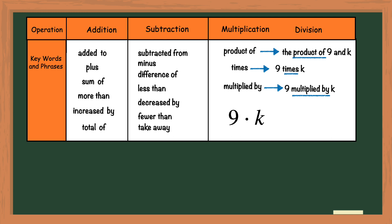You can use a dot to represent the multiplication sign but you cannot use an x because it looks too much like the variable x. You can also remove the multiplication sign in between the 9 and the k and just write 9k.